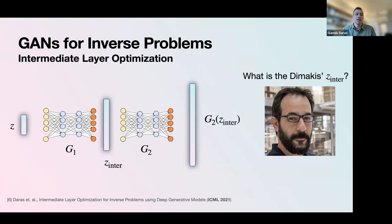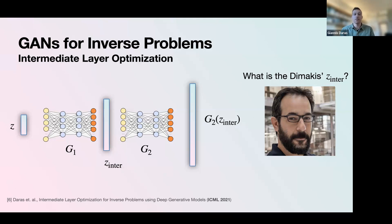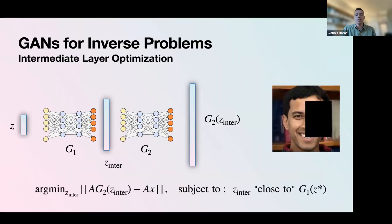We had an idea accepted at ICML 2021: instead of thinking of the generator as one box, we split it into two halves — G = G2 ∘ G1. G1 outputs a larger intermediate latent, and G2 outputs the final image. Now we optimize over this intermediate space, which is much more expressive because not all intermediate vectors can be expressed by G1. The optimization in this intermediate space gives results where it's actually very hard to tell which image is real. The background and glasses might be slightly off, but the reconstruction is strikingly close.